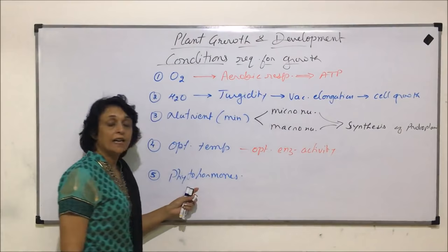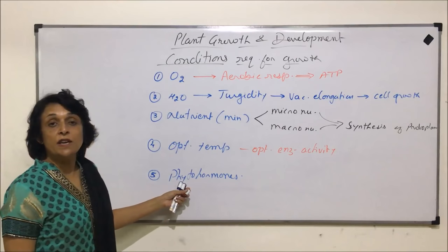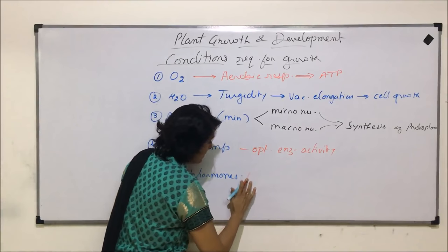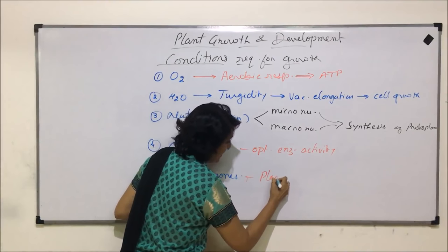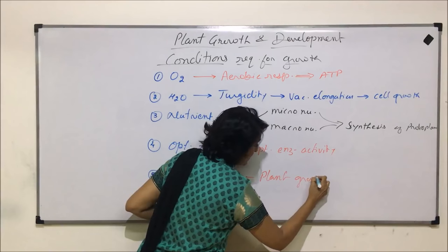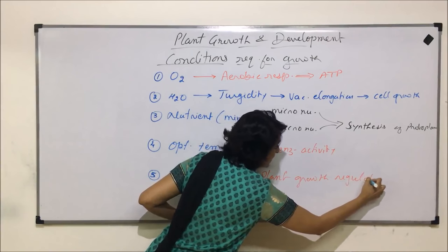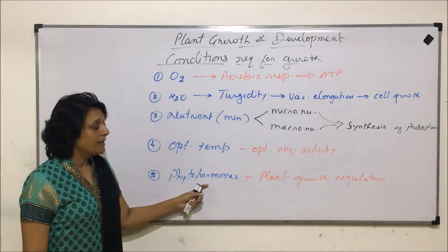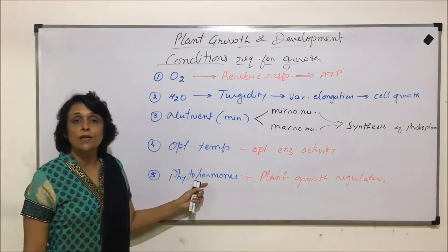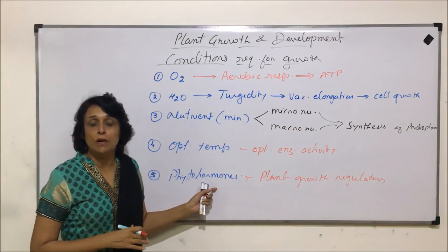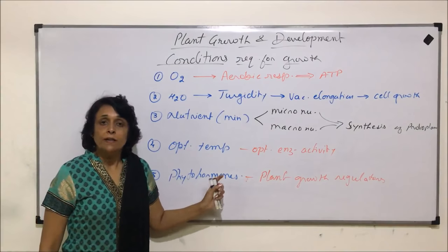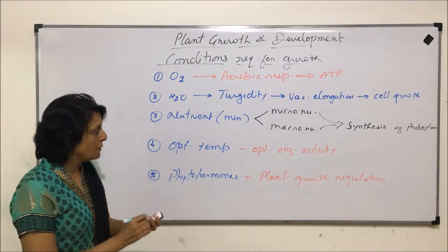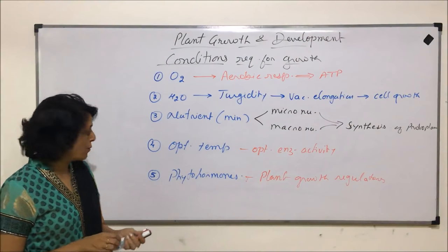The next condition is phytohormones. These are actually plant growth regulators. We will be discussing these phytohormones in detail, but they are divided into two categories: one which are growth promoters and the other ones which are growth inhibitors.